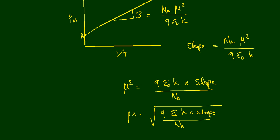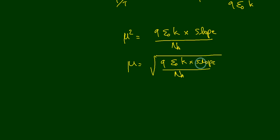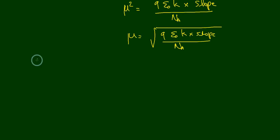This gives us the permanent dipole moment. The permanent dipole moment can be calculated from μ equals the square root of (9ε₀k times slope divided by Na). The parameter we need is the slope of the Pm versus 1/T curve, so we have to draw that curve experimentally.